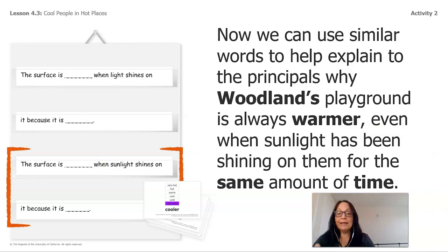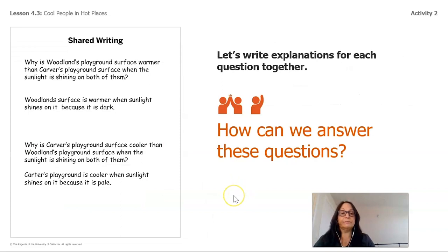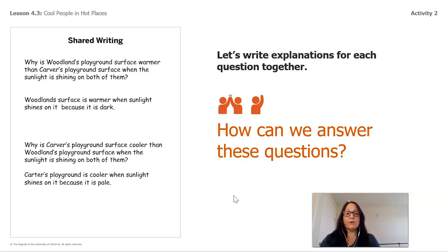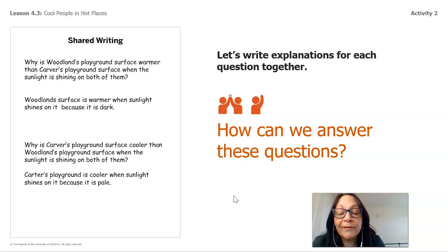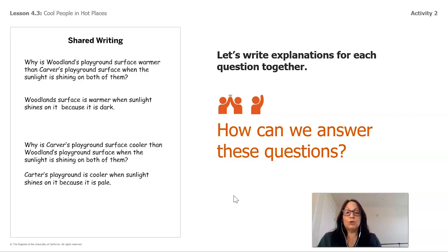Now we're going to go back and answer those questions. The first question is: why is Woodland's playground surface warmer than Carver's playground surface when the sunlight is shining on both of them? I want to hear your answers first—go ahead, I'm listening. Very good! My answer is: Woodland's surface is warmer when sunlight shines on it because it is dark.